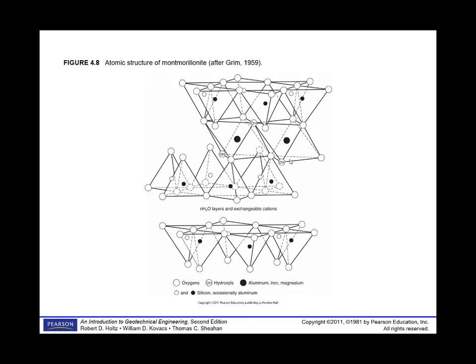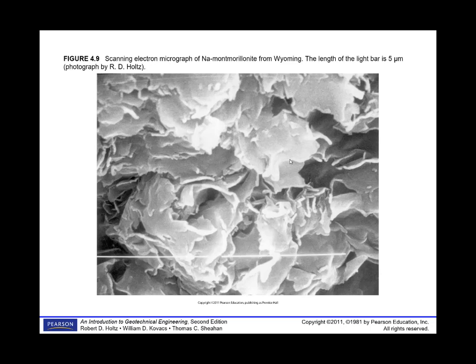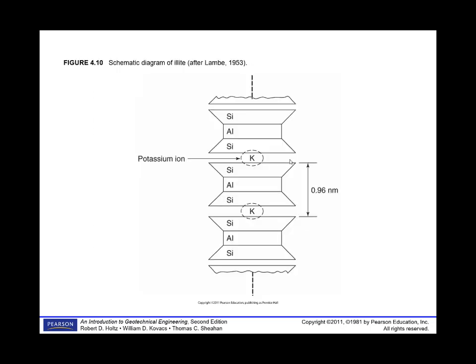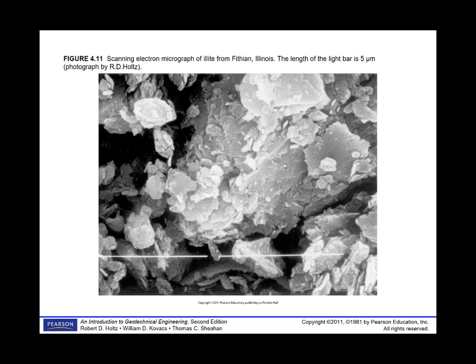The atomic structure of montmorillonite shows the two silica tetrahedral sheets with the octahedral sheet in the middle. A scanning electron micrograph of sodium montmorillonite from Wyoming — with a 5-micron scale bar — shows particles that look thin and fragile. Illite is similar to montmorillonite in structure, but potassium ions between the sheets bond them together, forming illite. The only difference between montmorillonite and illite is the presence of potassium between the sheets. The platiness of illite is somewhat similar to montmorillonite, except the aspect ratio tends to be a bit smaller, resulting in less swell potential.